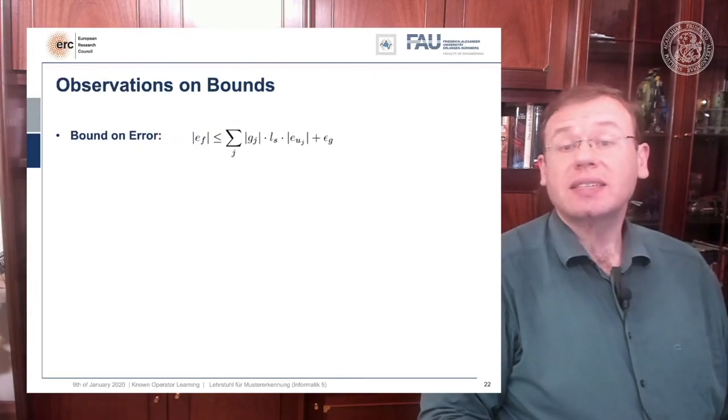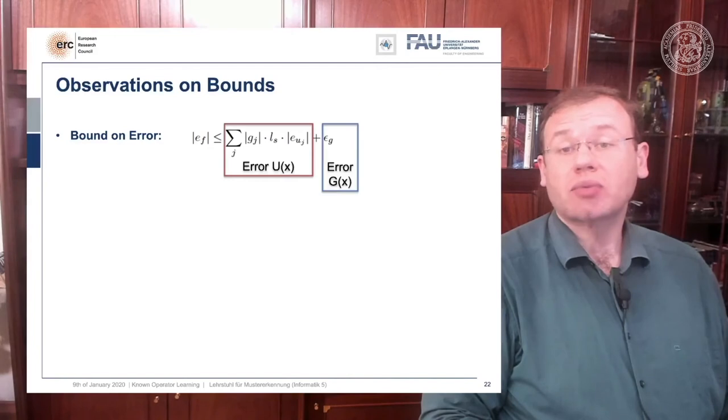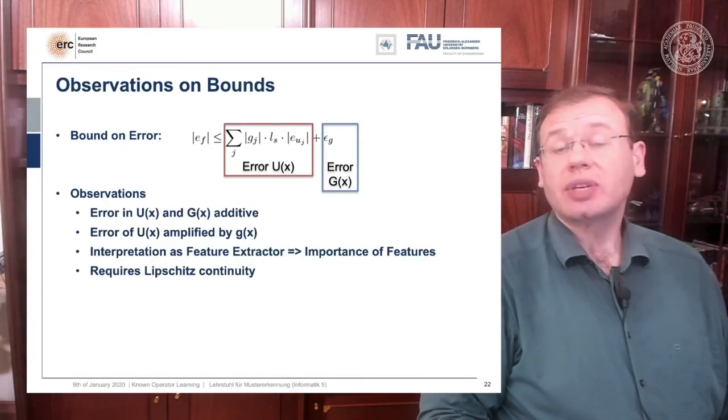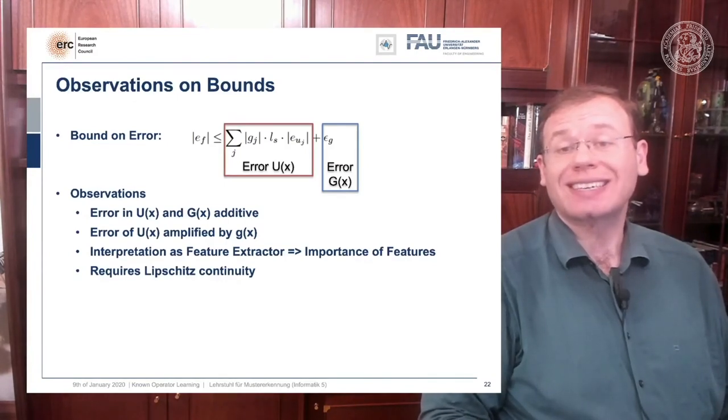So we can see that this bound has these very nice properties. And if we now relate this to classical pattern recognition, then we could interpret u of x as a feature extractor and g of x as a classifier. So you see that if we do errors in u of x, they get potentially amplified by g of x.